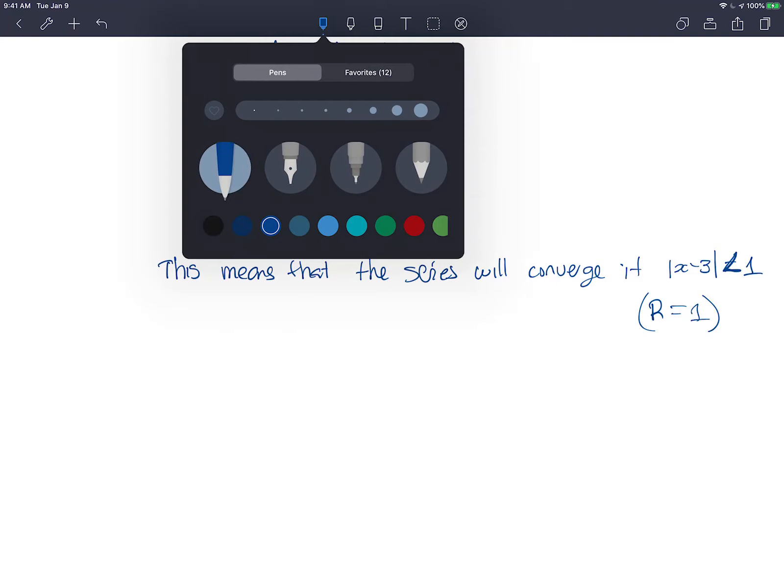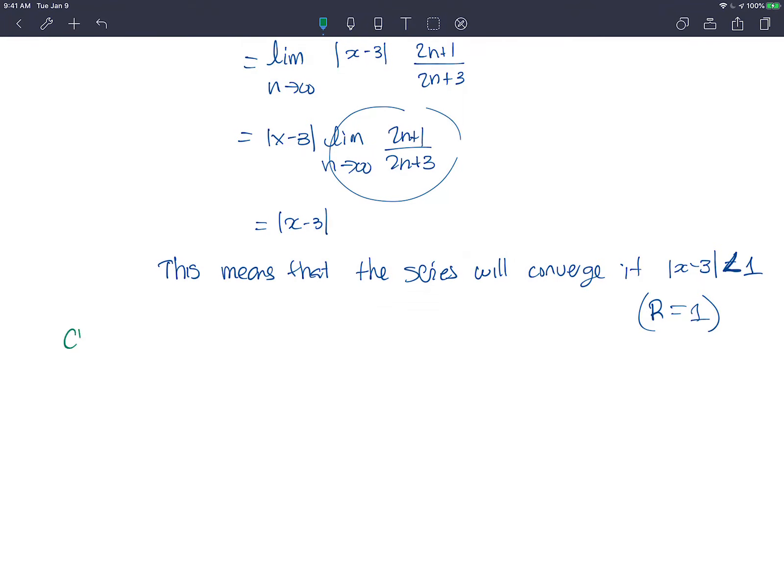So I'm checking endpoints now. Let me do x equals... If you want to write this as an interval, it really becomes x minus 3 sandwiched between negative 1 and 1. So when you add 3, the x is between 2 and 4, right?